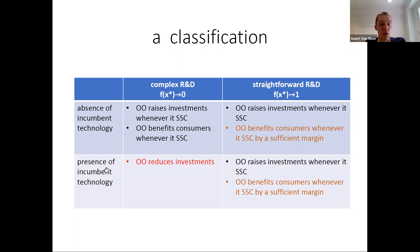When an incumbent technology is present and R&D is straightforward, the condition for overlapping ownership to raise investments remains similar to the baseline, but the bar for consumers to actually benefit from overlapping ownership becomes more demanding.